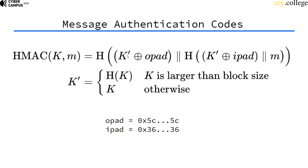Then it hashes the same key XORed with an outer pad and appends the hash value of the former computation to it, and then hashes it again.